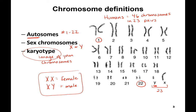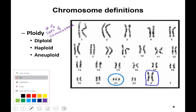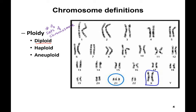Humans are considered diploid because our chromosomes are in pairs. Ploidy describes the number of sets of chromosomes. You are diploid — you have two sets. You can see here chromosome 1, you have two; chromosome 2, you have two; chromosome 3 — so you are in sets.